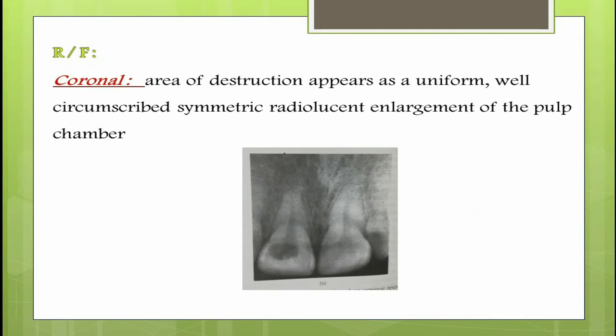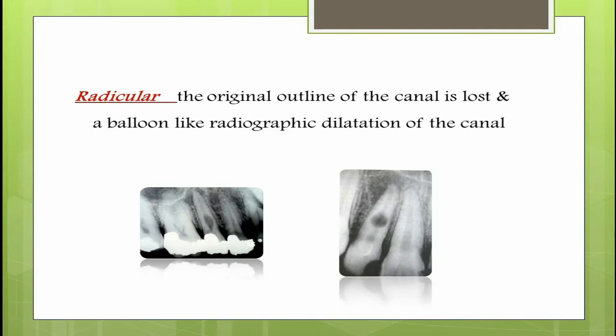In radiograph, if the coronal pulp is affected you will see an area of destruction appearing as a uniform, well-circumscribed, symmetric radiolucent enlargement of the pulp chamber. But if the radicular portion is affected, the original outline of the root canal will be lost and a clearly well-defined symmetrical radiolucency that balloons out of the root canal can be appreciated.